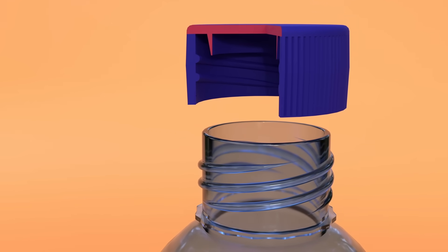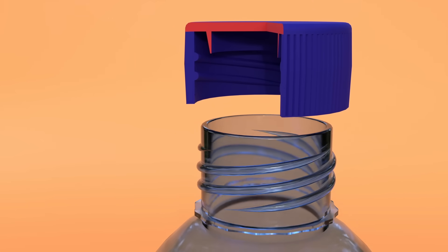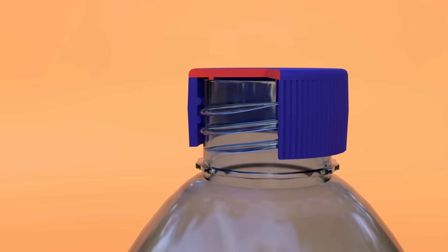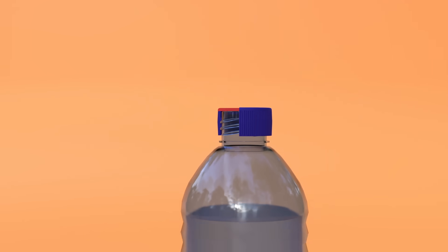So bottle caps usually have a ridge on the inside that works much like a cork. And the threads are just there to push and keep it in.